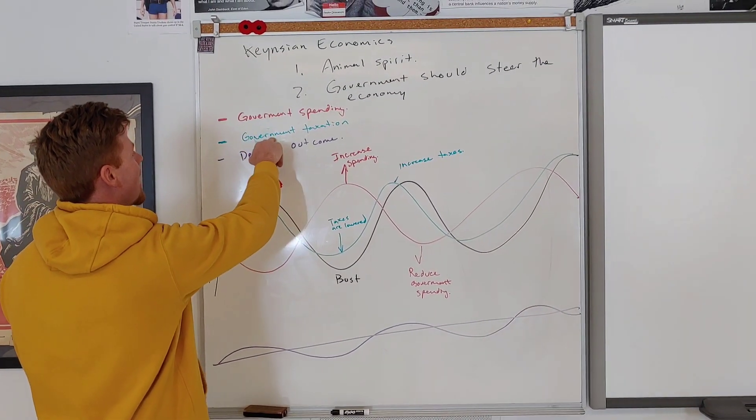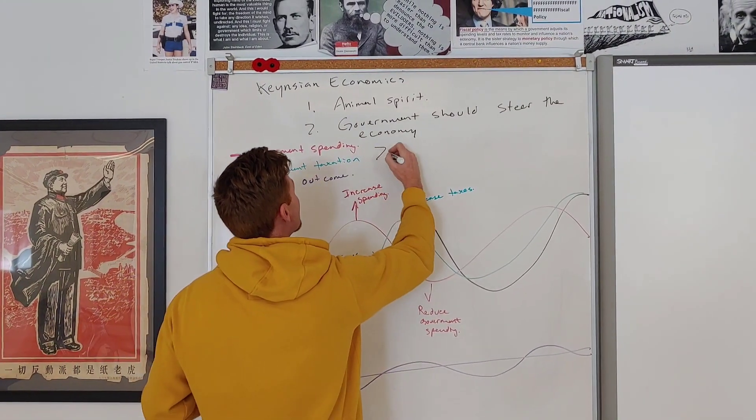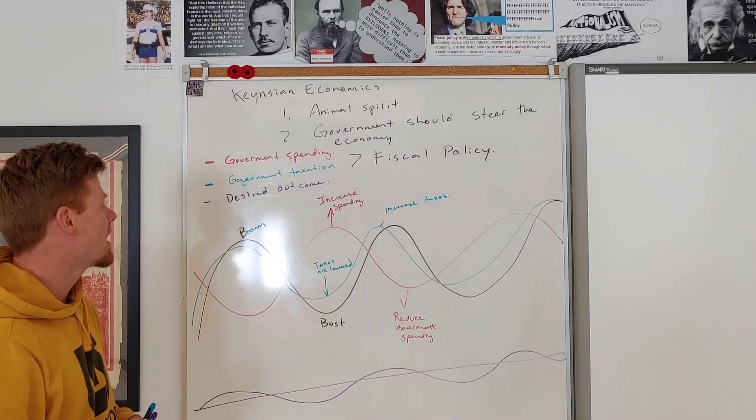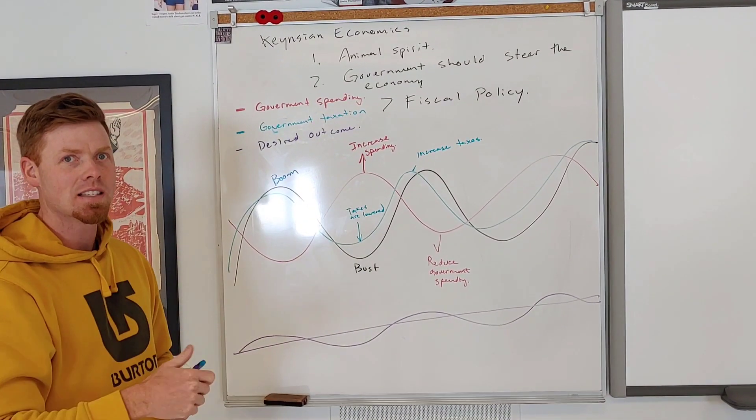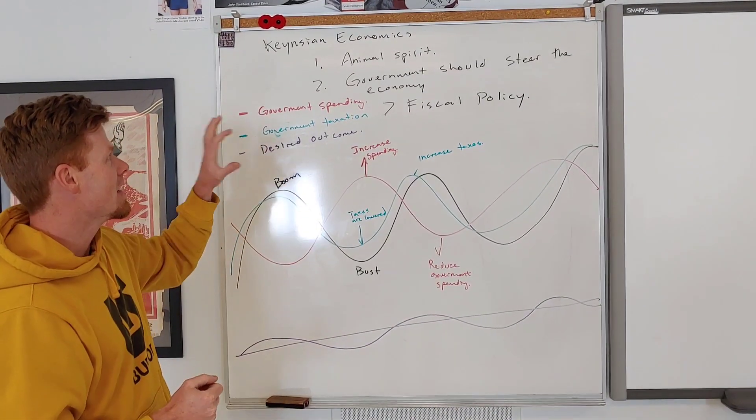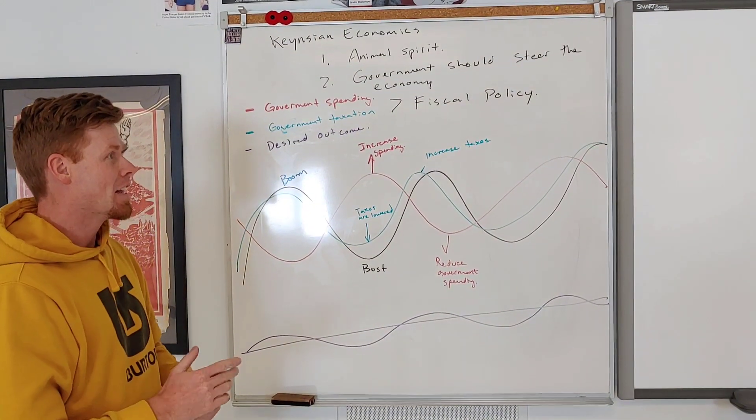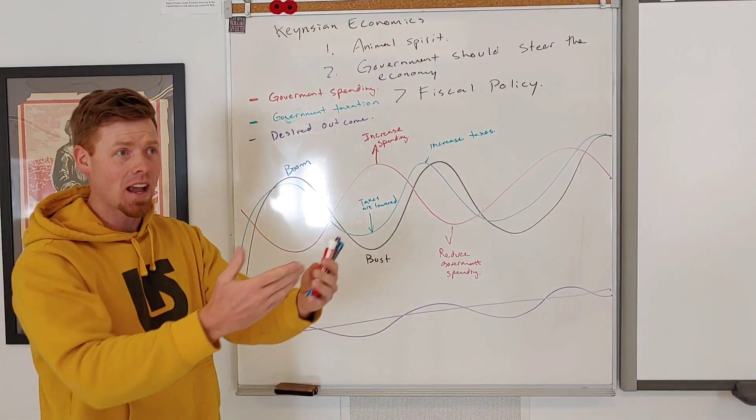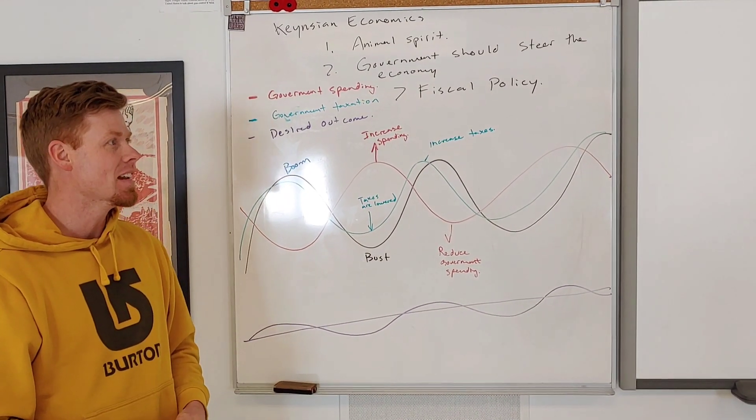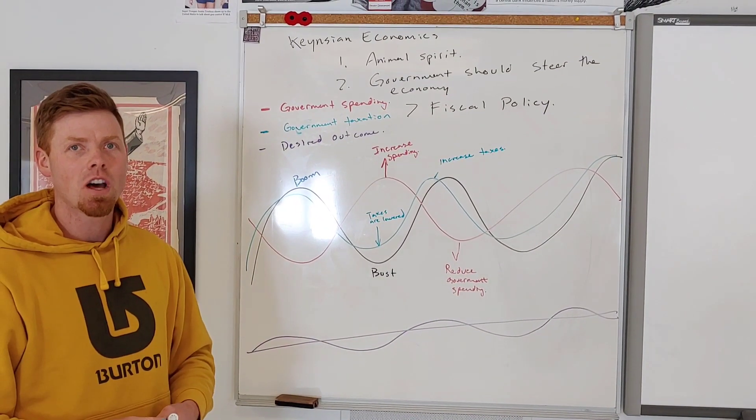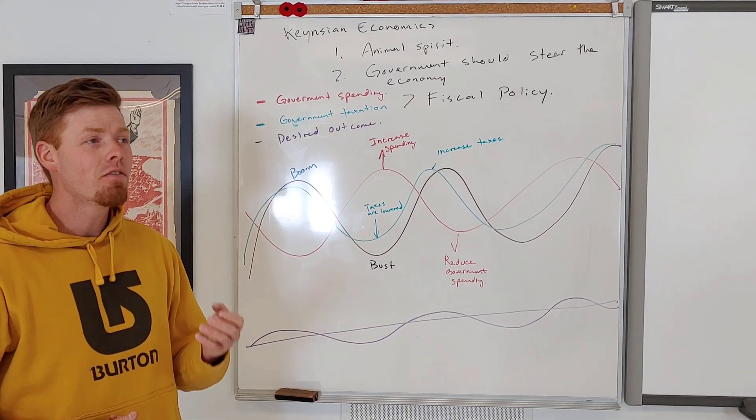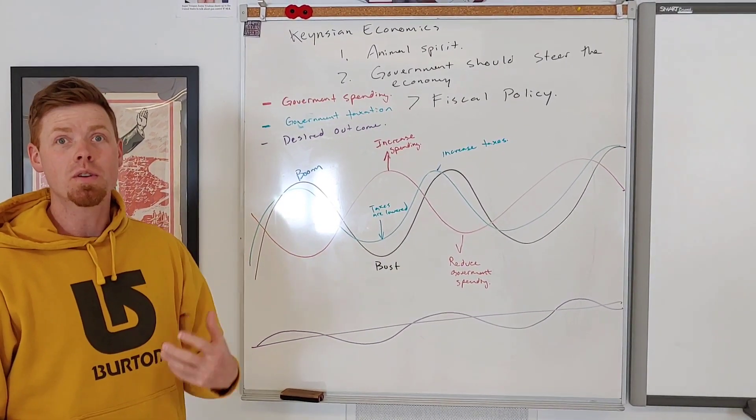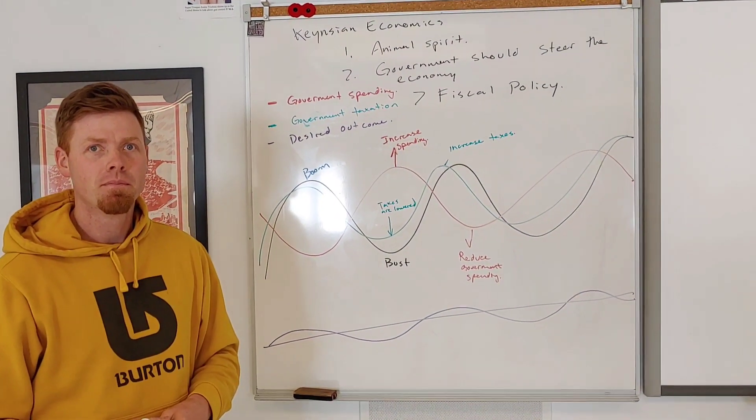We call these two things government spending and taxation collectively fiscal policy. This means government having more control or taking more control on how much they spend as a government and what kinds of things they do as far as tax law is concerned. These ideas of Keynesian economics became very popular in the Great Depression. These ideas were loved by Franklin Delano Roosevelt, who took these ideas and applied them in real life to create what was called Roosevelt's New Deal, which you guys are going to learn about here in a little bit.